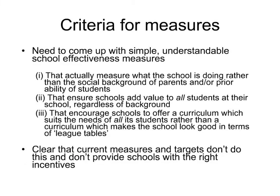We concluded that we needed to come up with cleaner measures — simple and understandable, so parents will use them, but measures that think about what the school is actually doing: the distance they're taking the child. For that, we need to think about the factors that would influence the likely trajectory of that child, including their social background. And for that, we need good administrative data that includes measures of the social background of children.